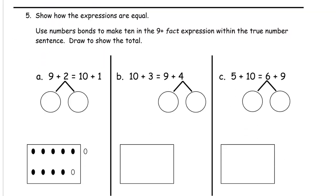Show how the expressions are equal. Use number bonds to make 10 in the 9 plus fact expression within the true number sentence. These are expressions here—these are the 9 plus expressions. We're using number bonds to make 10. We're drawing to show the total. In the first one, they've drawn the picture for us where they split the 2 into 1 inside and 1 outside the ten-frame. That's 1 and 1, so it's the same as 10 plus 1.